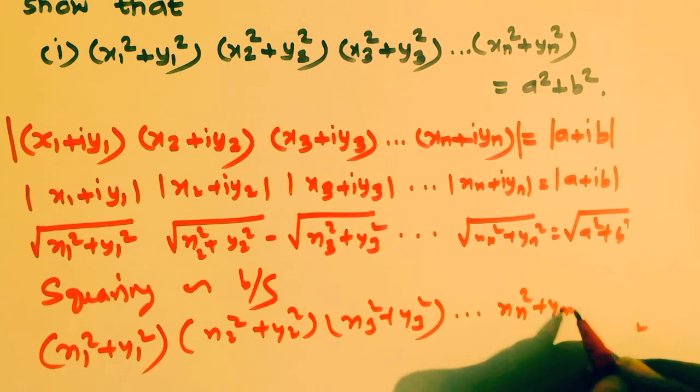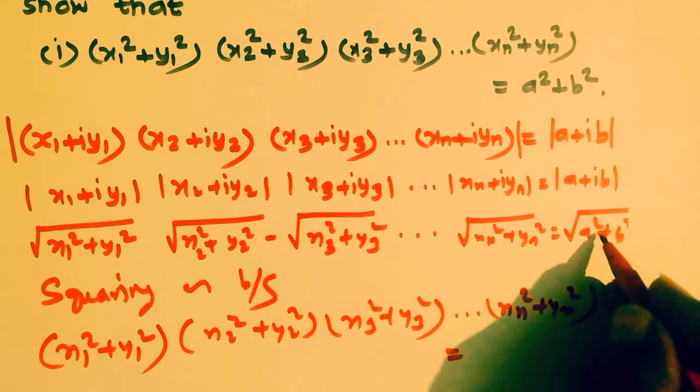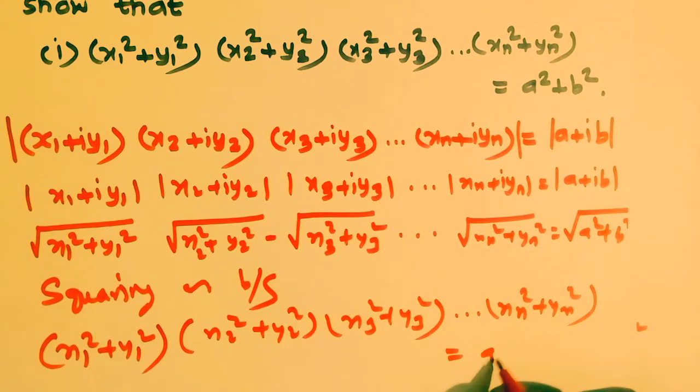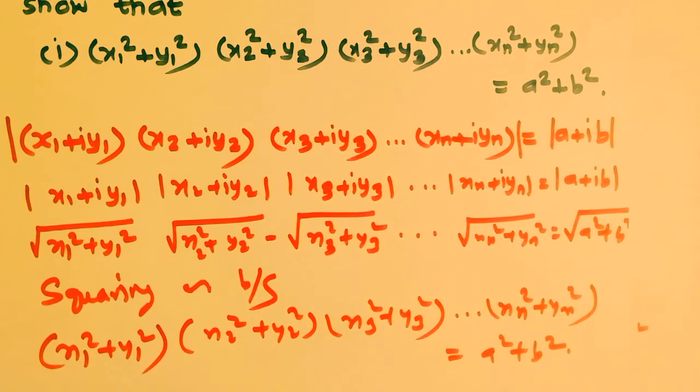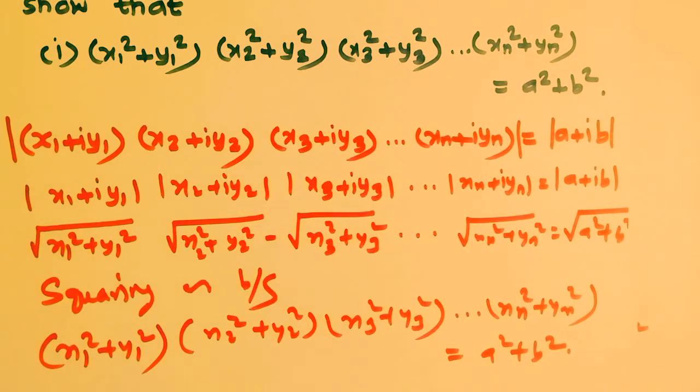Squaring both sides: (xn² + yn²) on the left side equals (a² + b²) on the right side after removing the square roots. This completes the proof for subdivision 1.